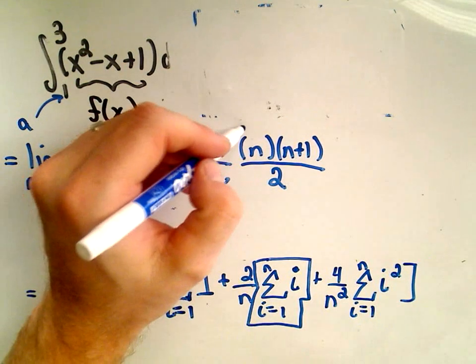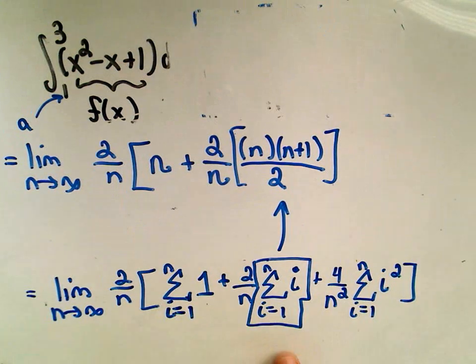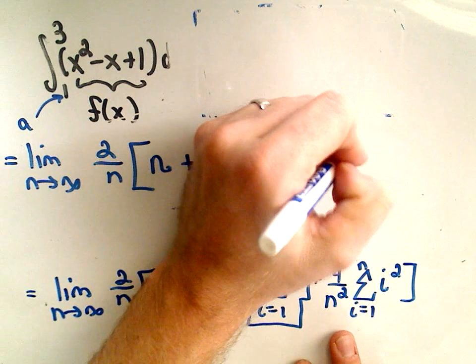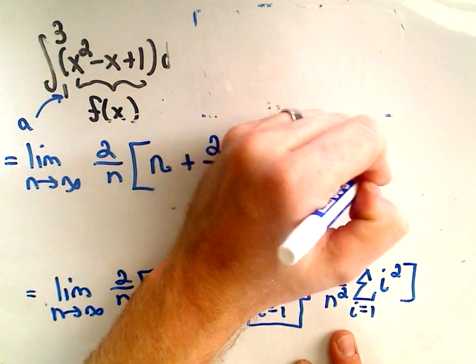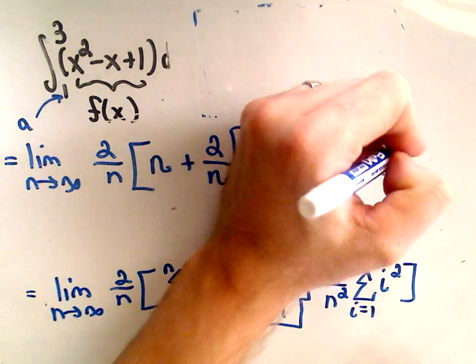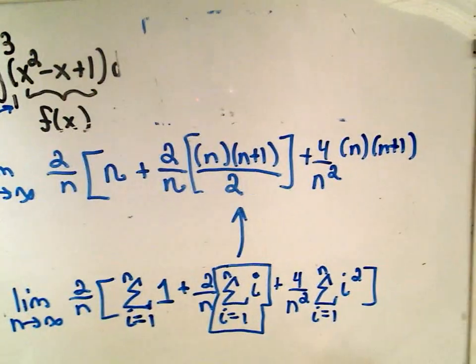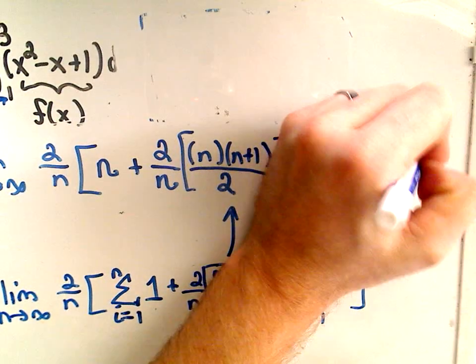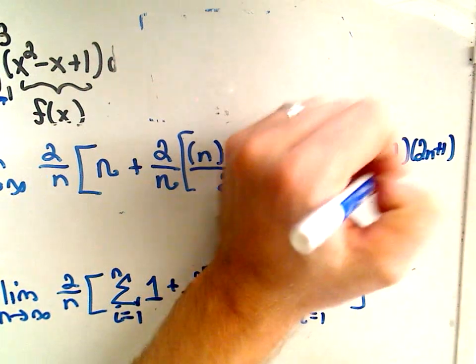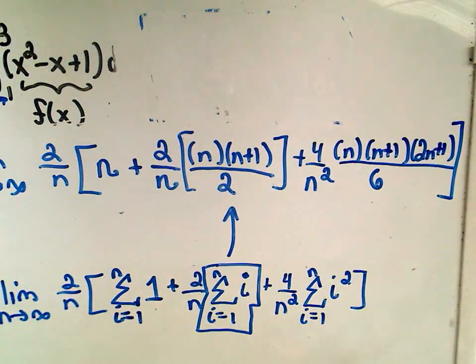Okay, so all of that, these are equivalent values. This is a shortcut for calculating the summation. Likewise, we saw that the formula for summing up from 1 to n of i squared, we said that was n times n plus 1, let's see if I can squeeze it all in here, times 2n plus 1 all over 6.